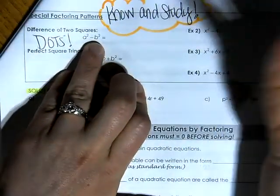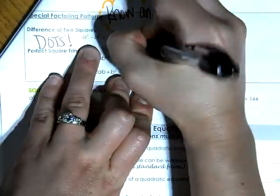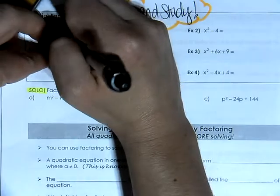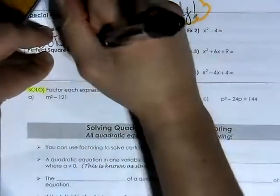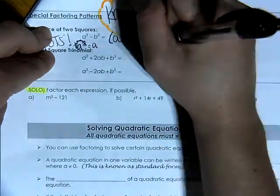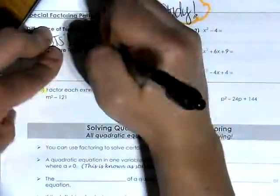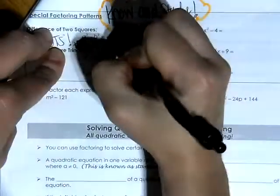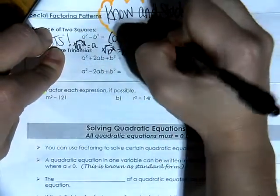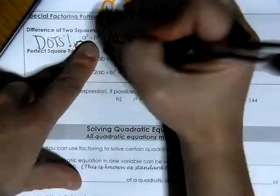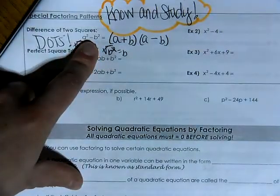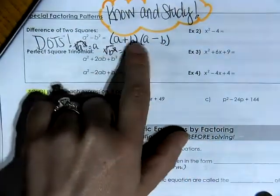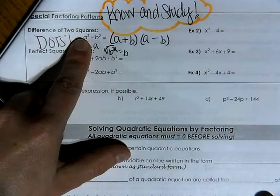A squared minus B squared — the pattern for this is two parentheses. The first term is the square root of A squared, which leaves us with A. The last term is the square root of B squared, which leaves us with B. How do you get a negative? You multiply a positive times a negative. So a difference of two squares has two parentheses where the first term is the square root of the first, the last term is the square root of the last, and the signs in between are different.